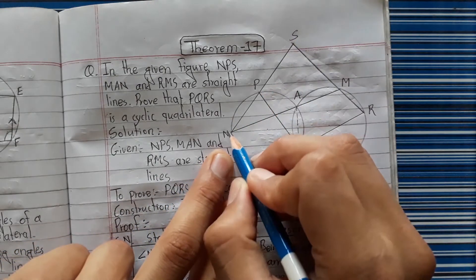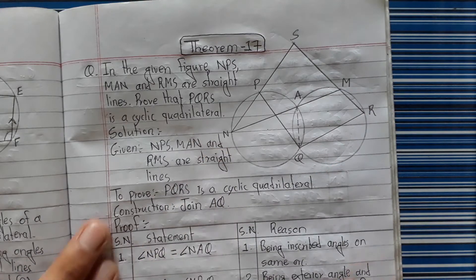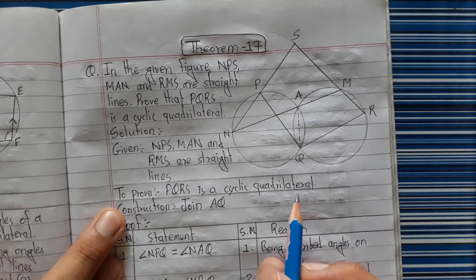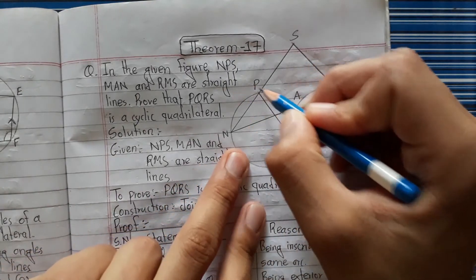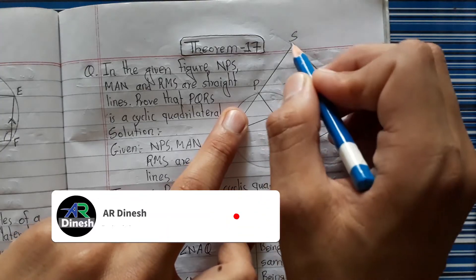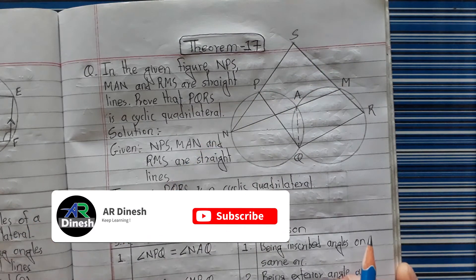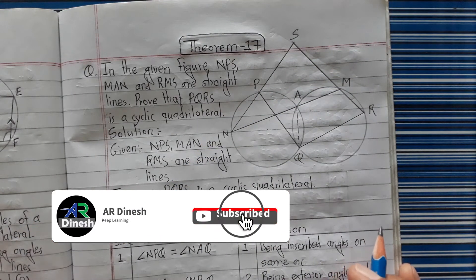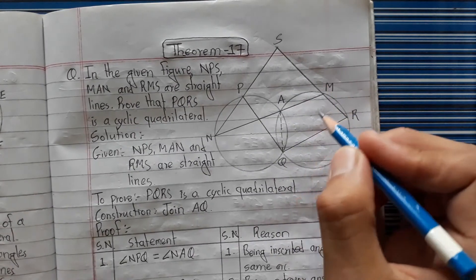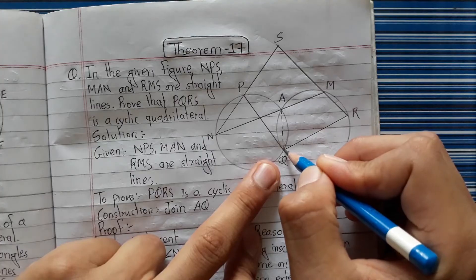This line, your line, and your line - this is what we've proven. PQRS is a cyclic quadrilateral. PQRS is a cyclic quadrilateral. Now we do the construction for this proof.